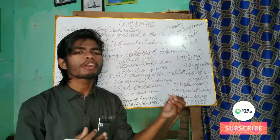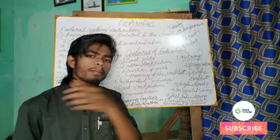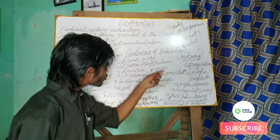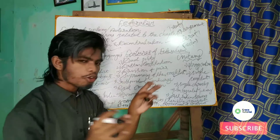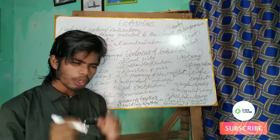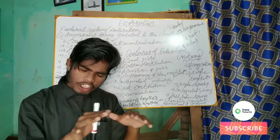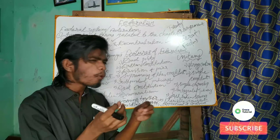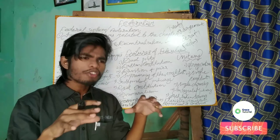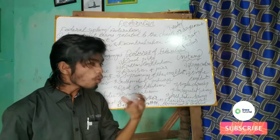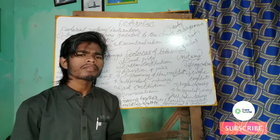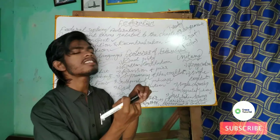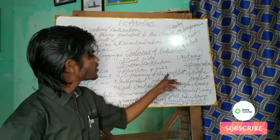Division of power: the constitution divides power between the center and the states through the union list, state list, and concurrent list. The concurrent list is common for both the center and the state, and in case of any conflict the central law prevails. Supremacy of the constitution: the constitution is the supreme law of the land. Laws enacted by both the legislature and the executive — both center and state — must conform to its provisions, otherwise they will be declared illegal or unconstitutional by the Supreme Court or High Court.